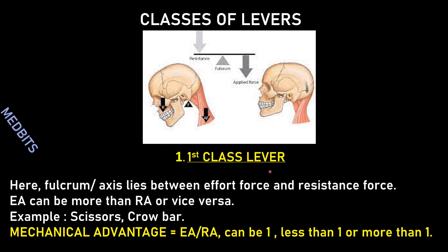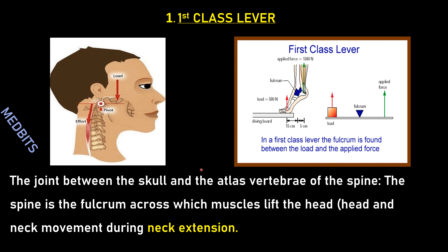First class lever: here the fulcrum or axis lies between the effort force and resistance force. The effort arm can be more than the resistance arm or vice versa. Examples include scissors or a crowbar. The mechanical advantage (effort arm divided by resistance arm) can be equal to one, less than one, or more than one.